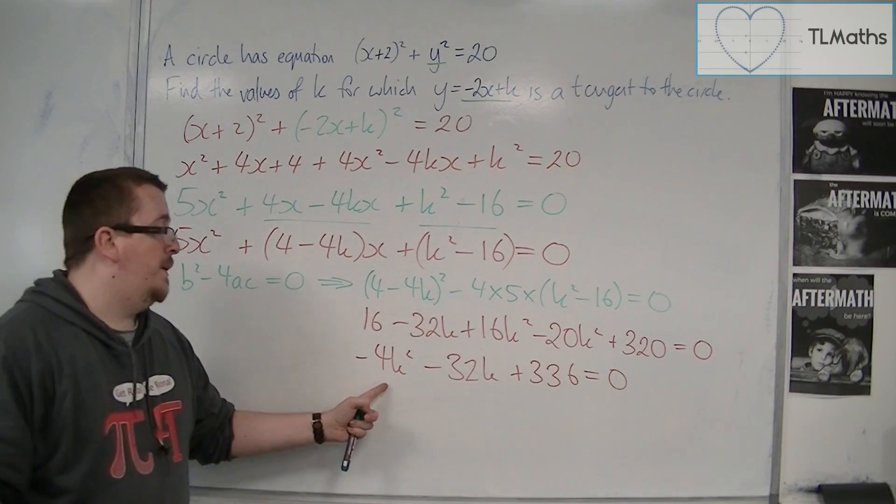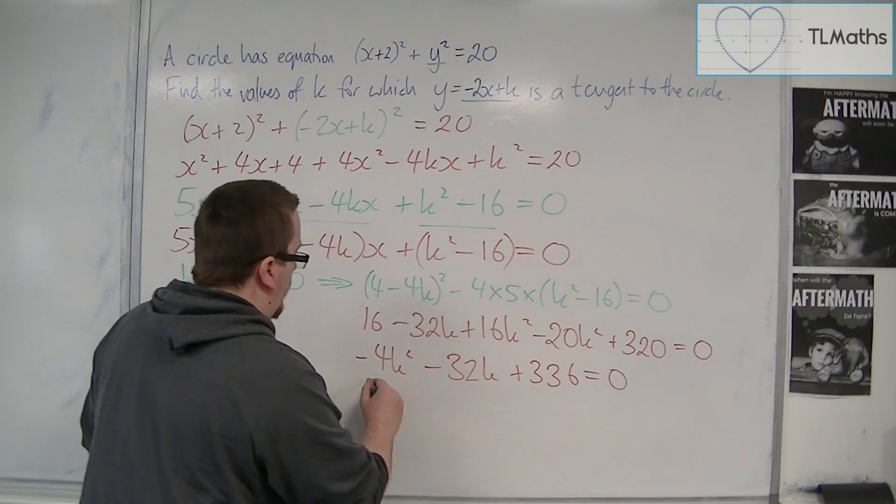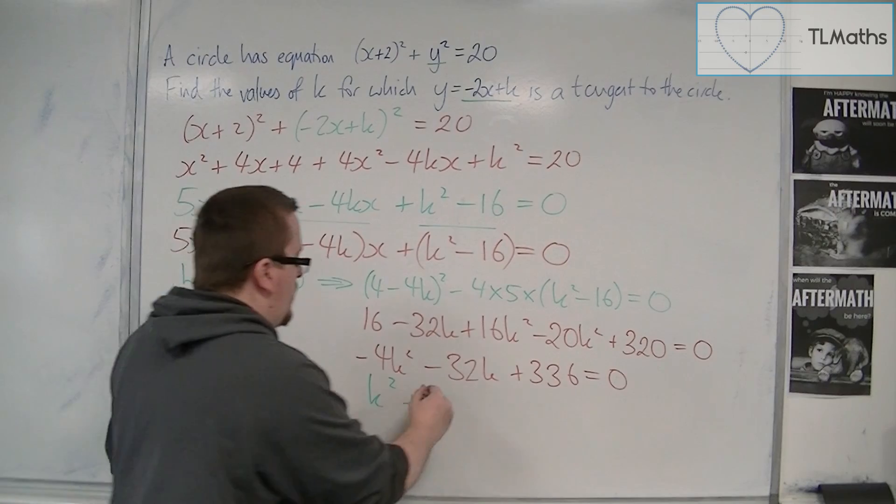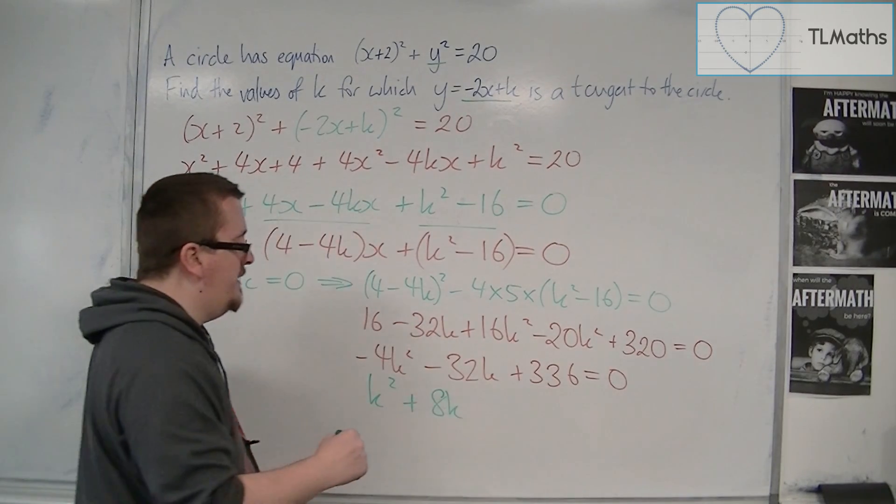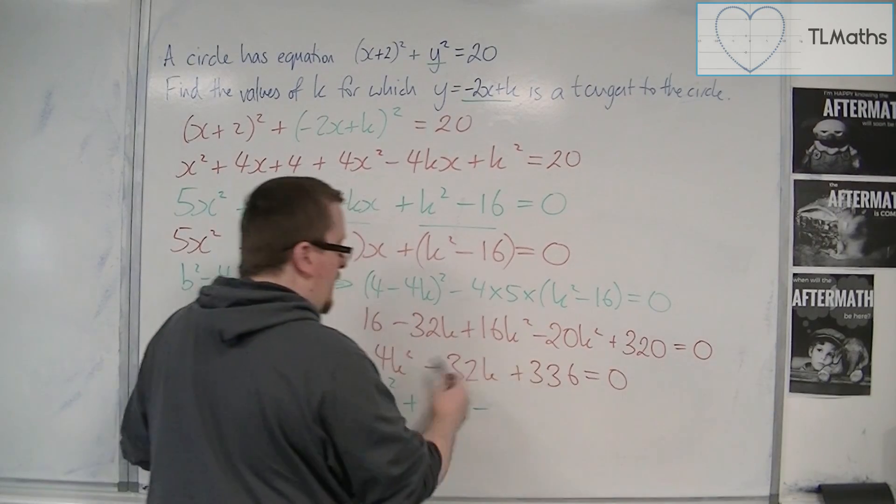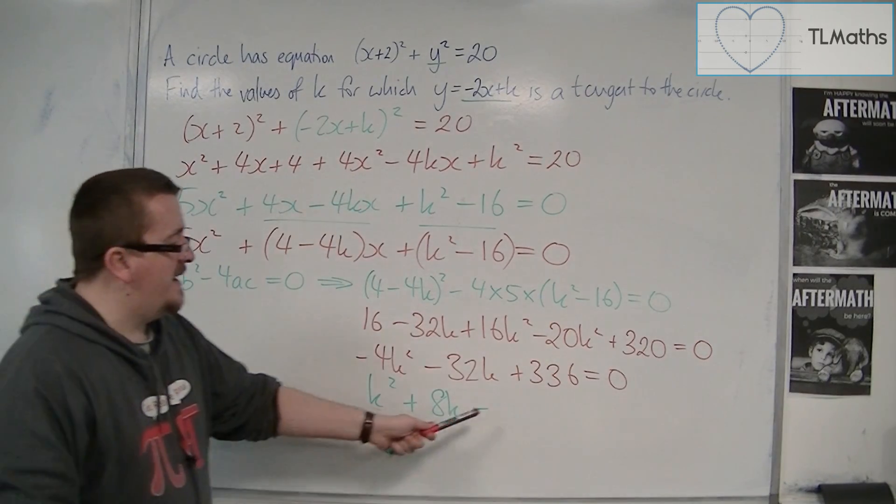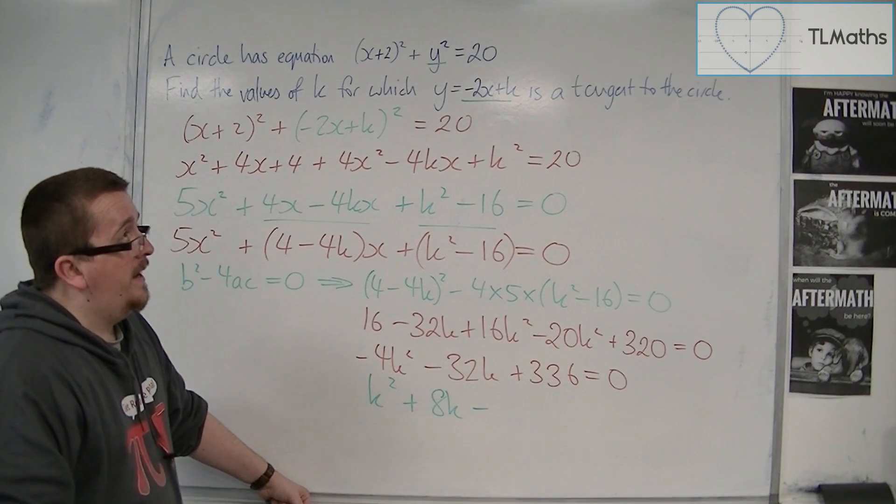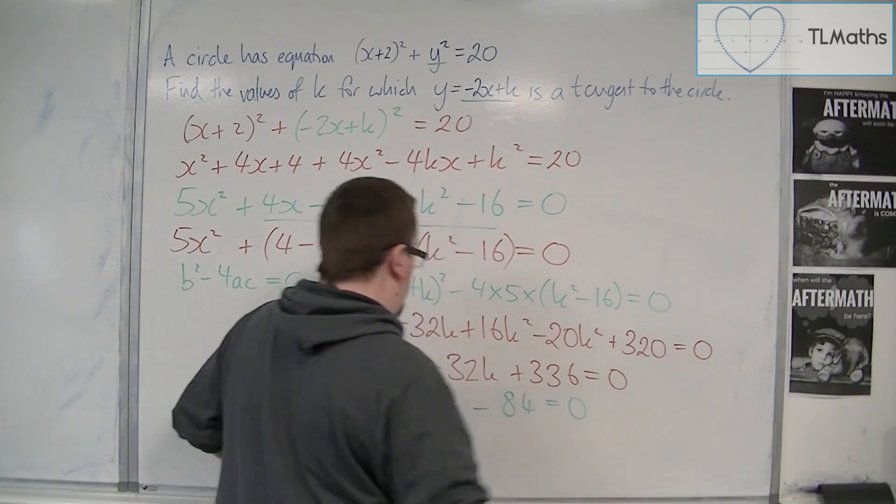We now want to divide through by that -4 to make it easier for ourselves. So we're going to have k² + 8k, so -32 divided by -4 is 8. Minus, now dividing 336 by -4, so we're going to get a negative, is going to be -84 = 0.